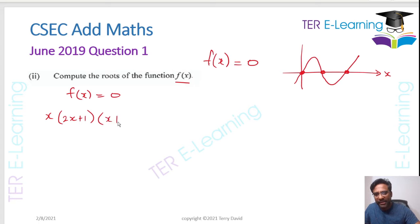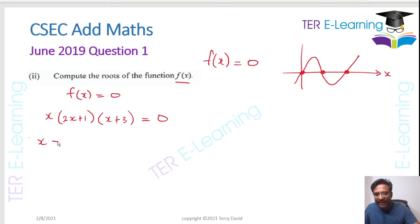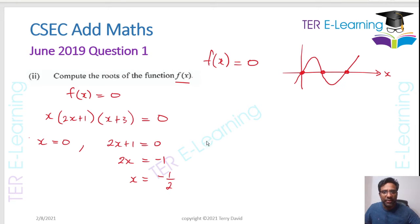We set f(x) = 0, so x(2x + 1)(x + 3) = 0. Each factor gives a solution: x = 0 is one solution; 2x + 1 = 0 gives x = −1/2; and x + 3 = 0 gives x = −3. So the three roots are x = 0, x = −1/2, and x = −3.